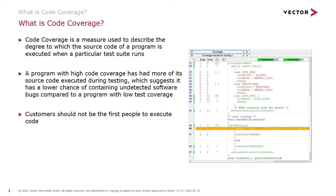So what is code coverage? Code coverage is a measure used to describe how much code has been executed when a particular test suite runs. The idea is that a higher level of code coverage means that more code has been executed during testing, which suggests there's a lower chance of undetected bugs making it through. We don't want customers to be the first people to execute code — we want to make sure we've executed all of the code during our testing.